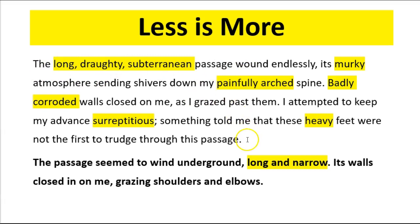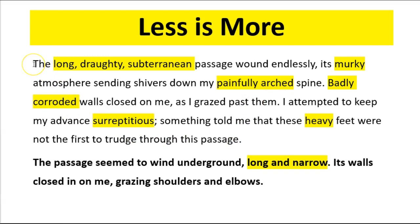This is the first paragraph: 'The long, drafty, subterranean passage wound endlessly, its murky atmosphere sending shivers down my painfully arched spine. Badly corroded walls closed on me as I grazed past them. I attempted to keep my advance surreptitious. Something told me that these heavy feet were not the first to trudge through the passage.' That's a really good bit of writing with plenty of description. I've highlighted the adjectives in yellow. But the downfall of this writing is that it tells us too much — it's too complete a picture of the dove. We want to get on with the story. So my version tries to include the details that matter.